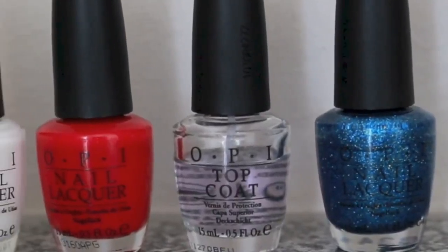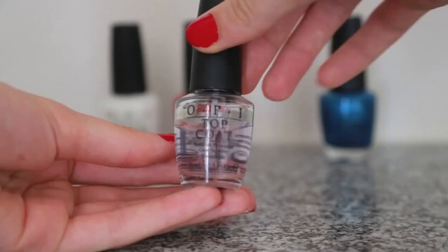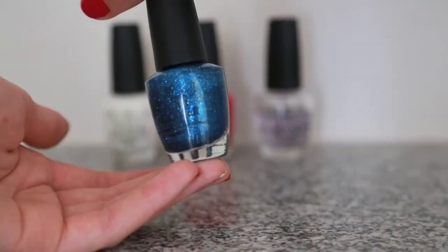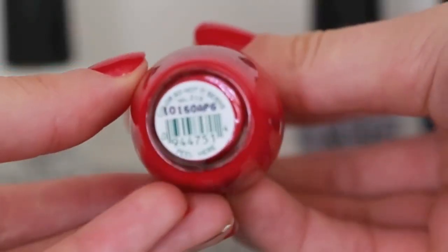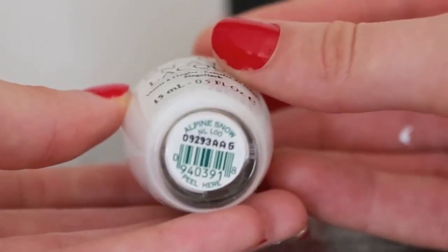All you need is red, white, and blue, and a clear top coat. I'm using a clear OPI top coat, a blue glitter called Absolutely Alice, a red called Color So Hot It Burns, and a white called Alpine Snow.